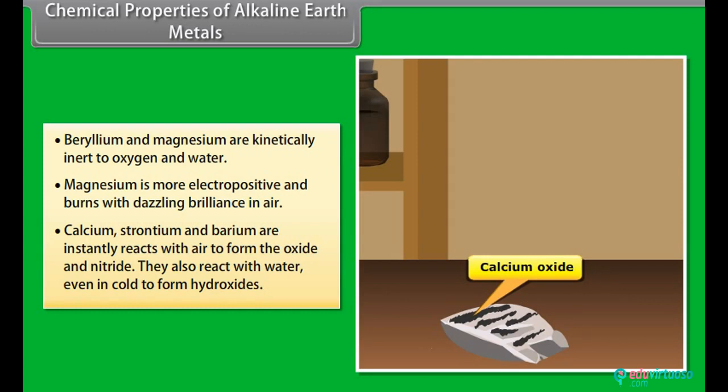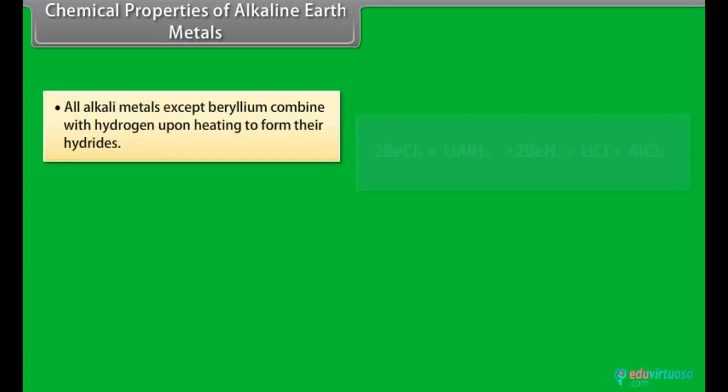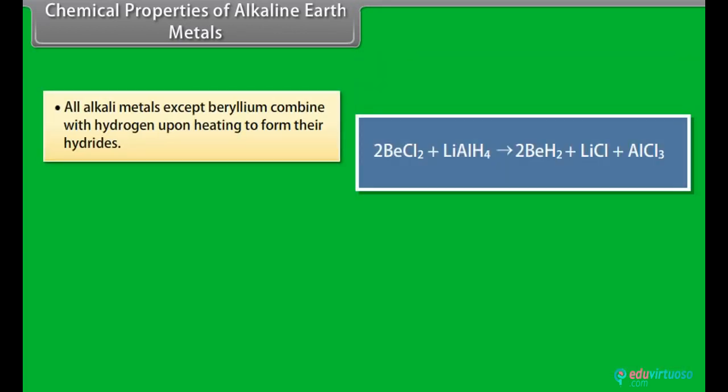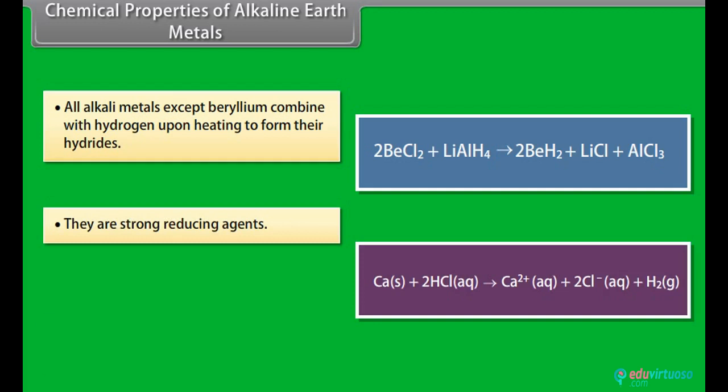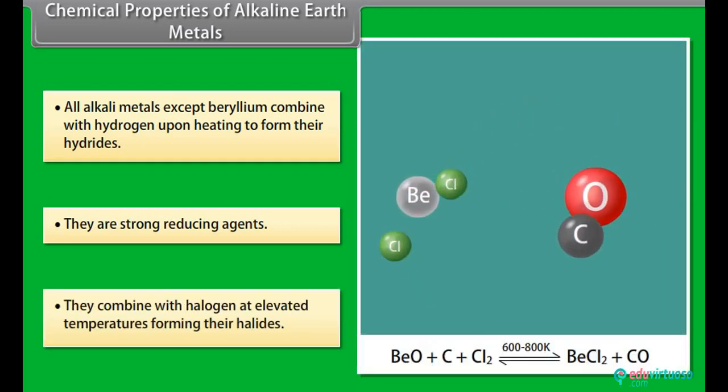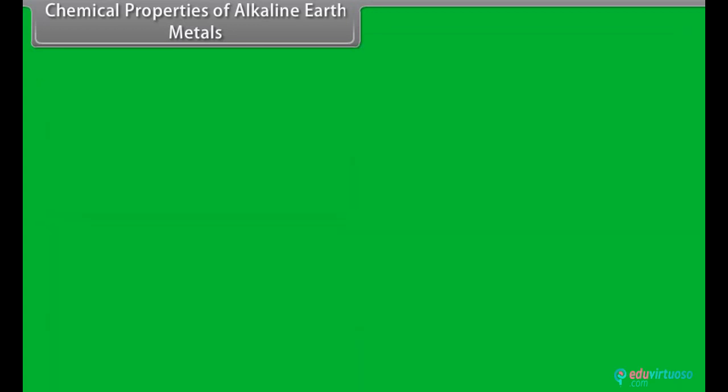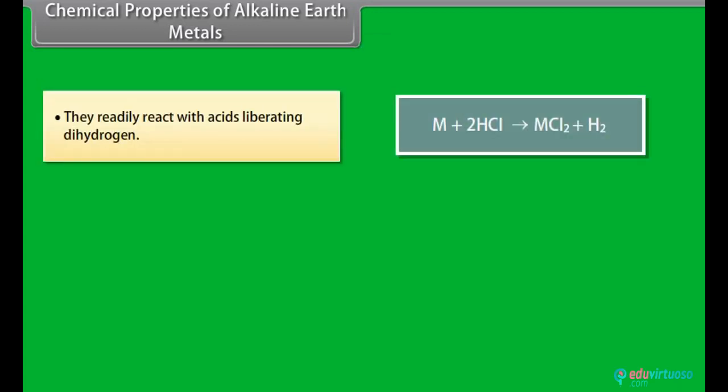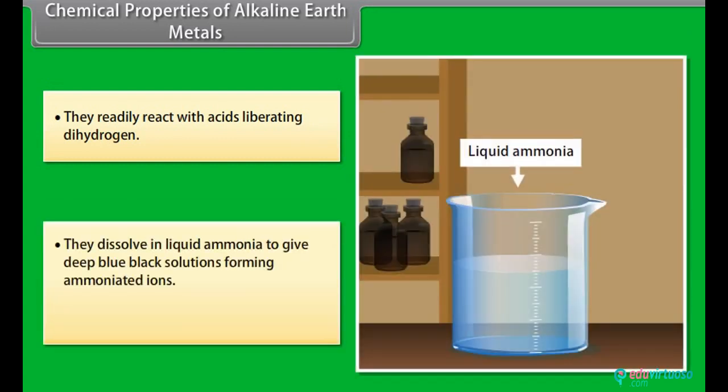They also react with water even in cold to form hydroxides. All alkaline earth metals except beryllium combine with hydrogen upon heating to form their hydrides. They are strong reducing agents. They combine with halogens at elevated temperatures forming their halides. They readily react with acids liberating dihydrogen. They dissolve in liquid ammonia to give deep blue-black solutions forming ammoniated ions.